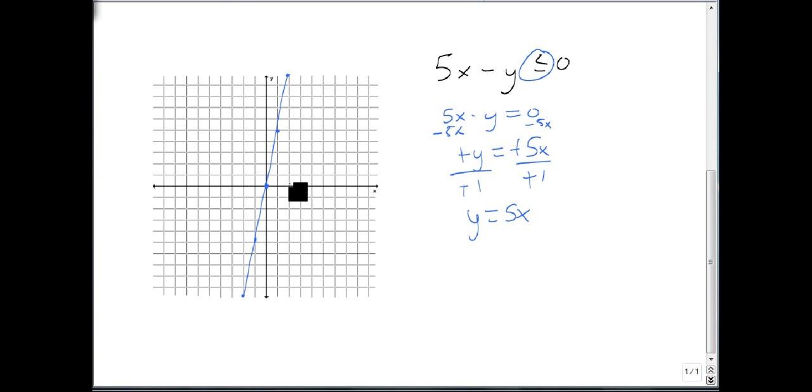And we'll pick another point to test. Again, we can't use (0,0), so let's use (2,0) again. So now we get 5 times 2 minus 0 is less than or equal to 0. 10 minus 0 is less than or equal to 0. Is 10 less than or equal to 0? No, it's false. So I can't shade that side.